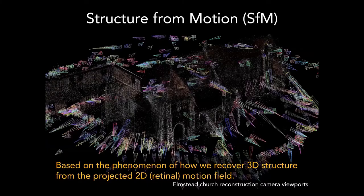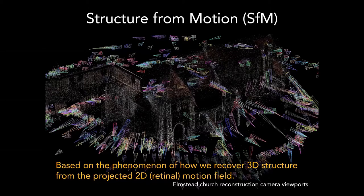These are the viewpoints of the cameras — the camera went around the church and a little bit over the top, and you can see the diagonals where it was taking the picture. Photogrammetry uses a process called structure from motion — it builds the structure of the model from the motion of the camera. Often people try to do this by standing still and turning around in a circle, but that doesn't work well because you actually need to move the camera around, not just turn it.